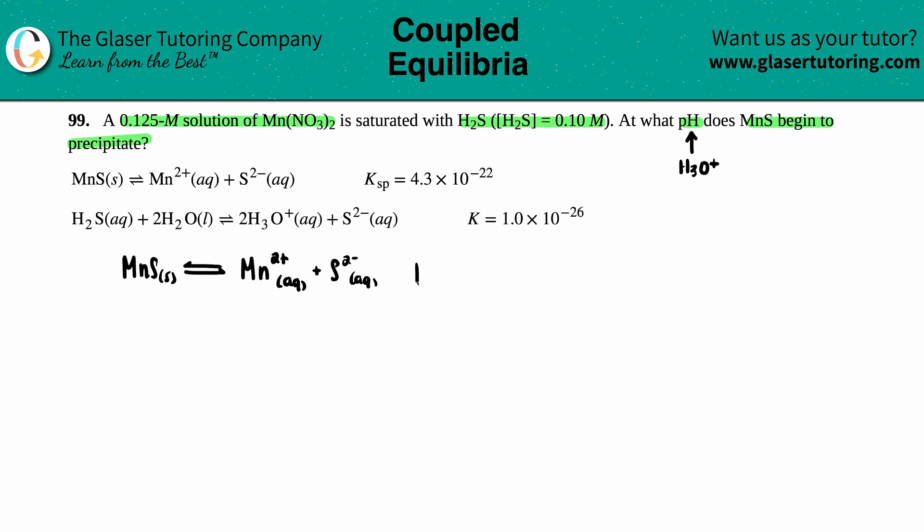They tell me that this has a KSP of 4.3 times 10 to the negative 22nd. And since it has a KSP, let's just write out this specific equation. KSP just equals always the concentration of the products. So in this case, we have the concentration of Mn²⁺ times S²⁻.